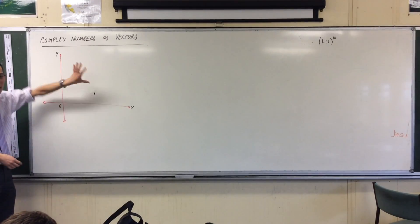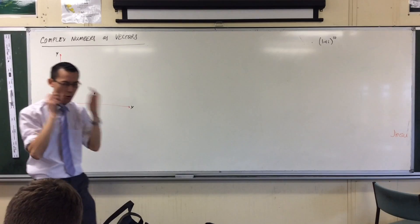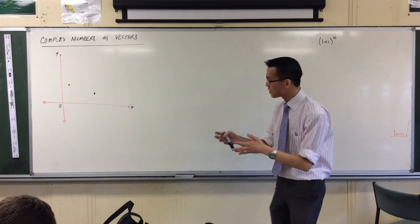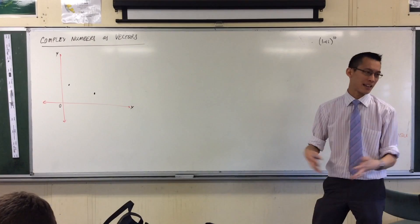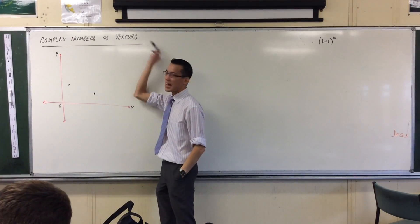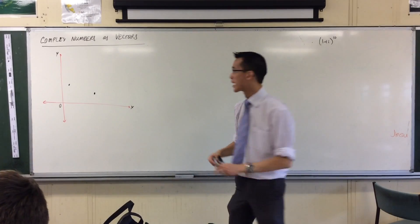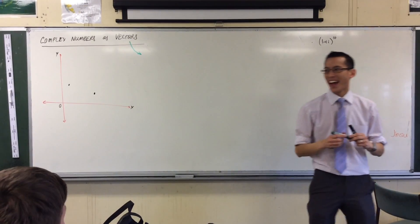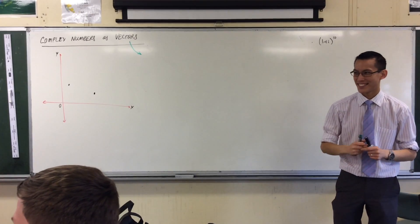So now, we're going to look at yet another way—complex numbers are just so versatile—yet another way of representing them, which again, will give us all these extra bonus insights that we'll get. So, complex numbers as vectors. Let's get a definition on the board. What's a vector? I was so excited! Me too!